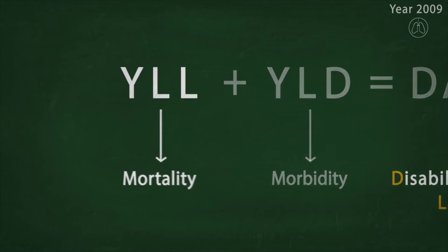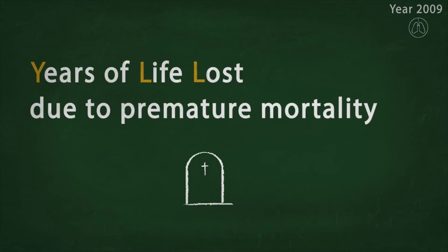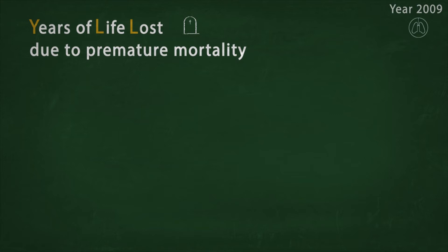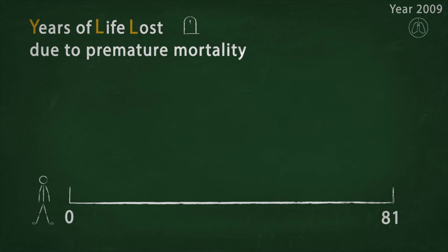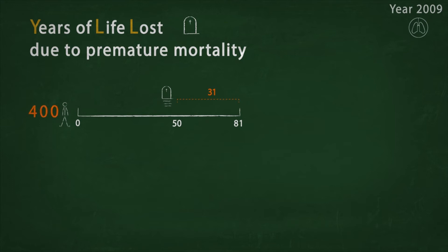YLL stands for years of life lost due to premature mortality — the years lost if a person dies before reaching average life expectancy. For a person living in Germany, life expectancy is on average 81 years. If a person dies due to lung cancer before reaching this age, for example at age 50, she or he loses 31 life years. The YLLs are estimated for all deceased people at a certain age. So if 400 people die at the age of 50 due to lung cancer, we multiply 400 people by 31 years, which results in 12,400 life years lost.